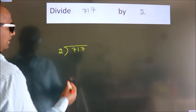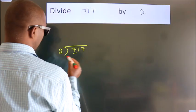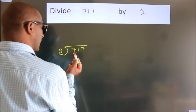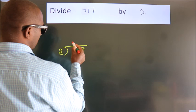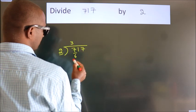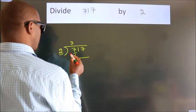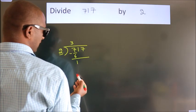Next. Here we have 7. Here 2. A number close to 7 in the 2 table is 2 times 3 is 6. Now we should subtract. We get 1.